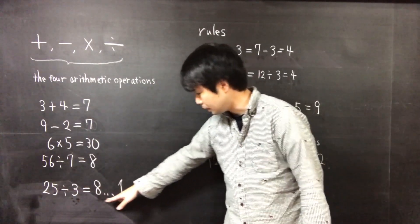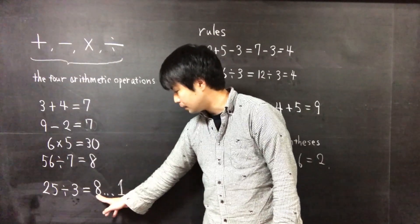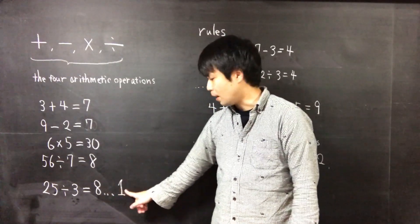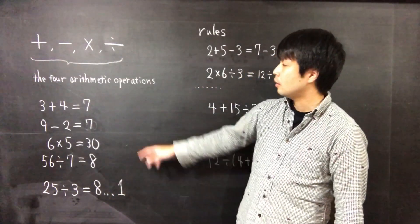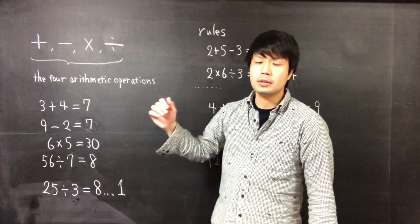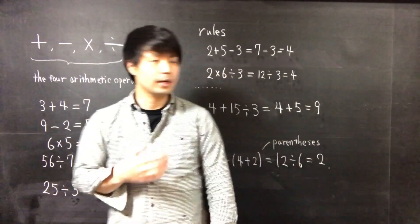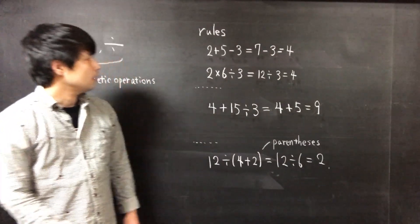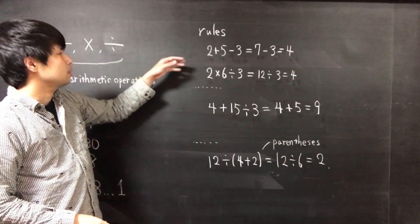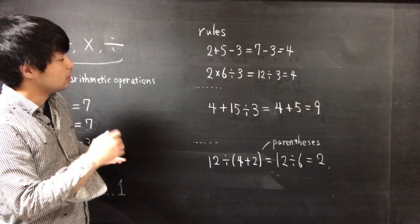In case we cannot divide evenly like this, the answer is written like this: 8 with the remainder of 1.